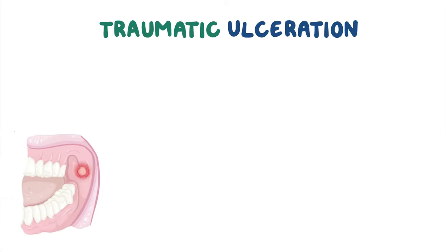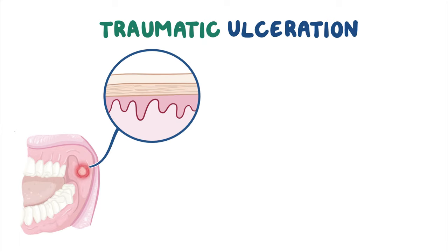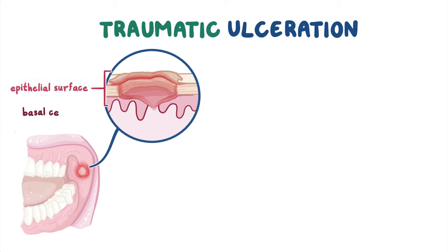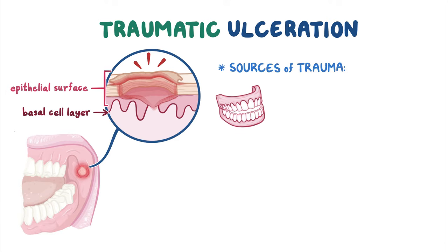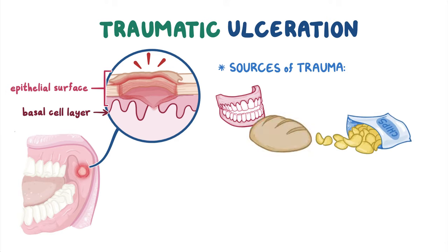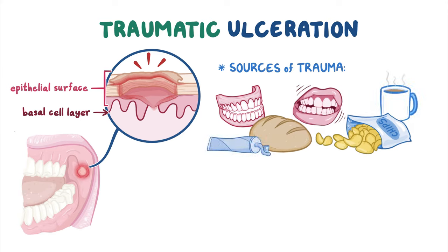A traumatic ulceration is caused by an injury that cuts the epithelial surface below the basal cell layer. Sources of trauma include ill-fitting dentures, hard foods like crusty bread and chips, biting injury, irritation from chemicals in toothpastes or rinses, and burns from hot foods or drinks. It is often associated with an underlying inflammatory response.